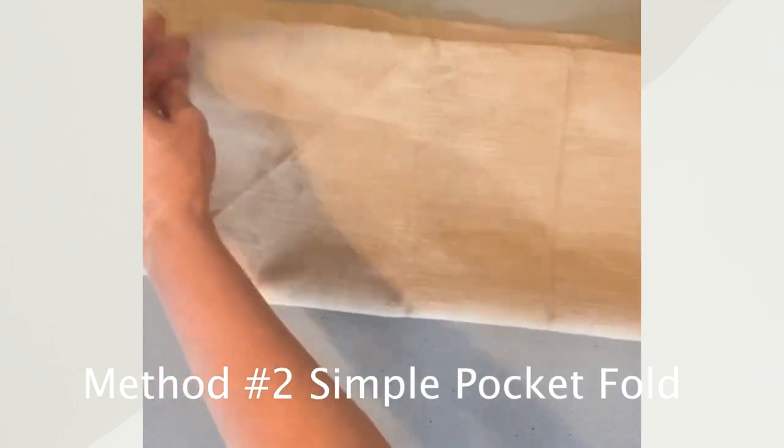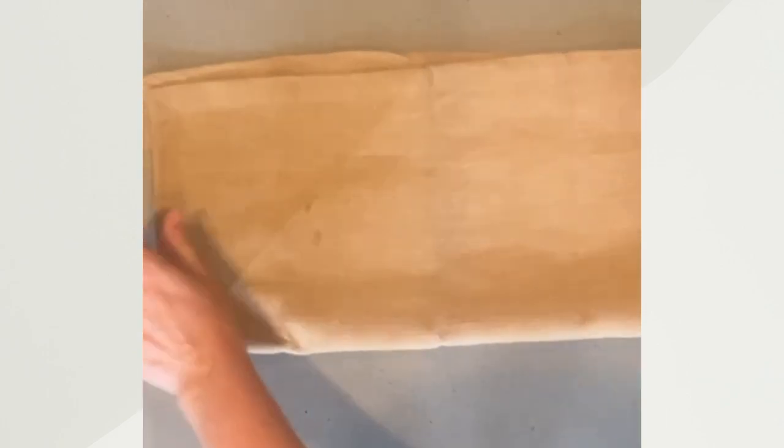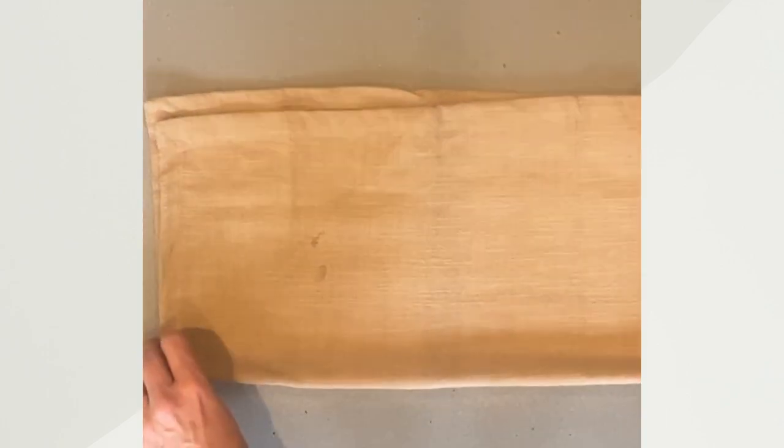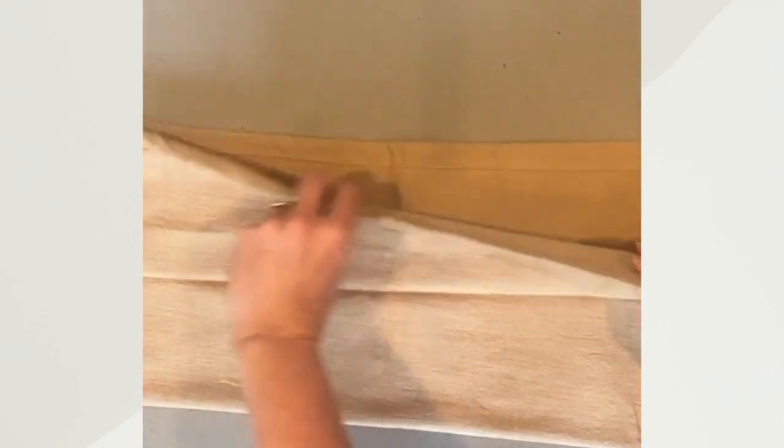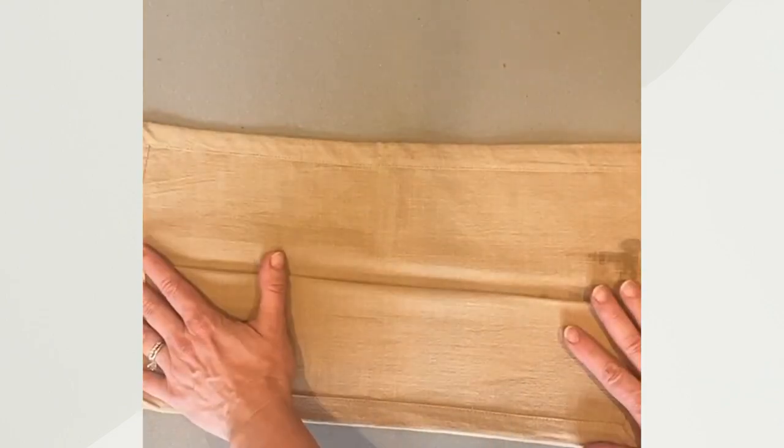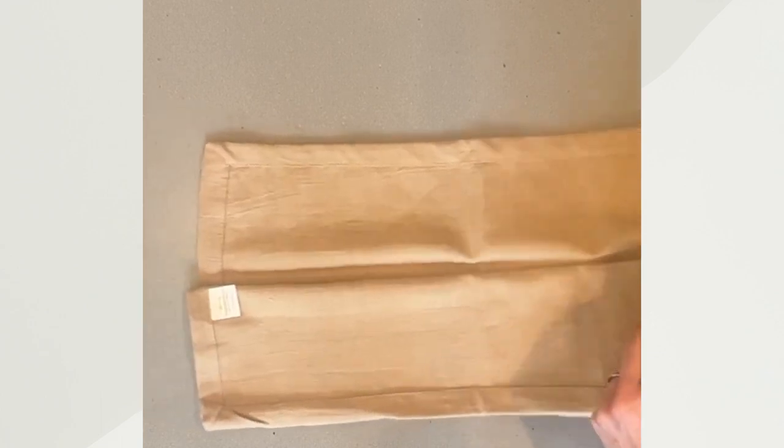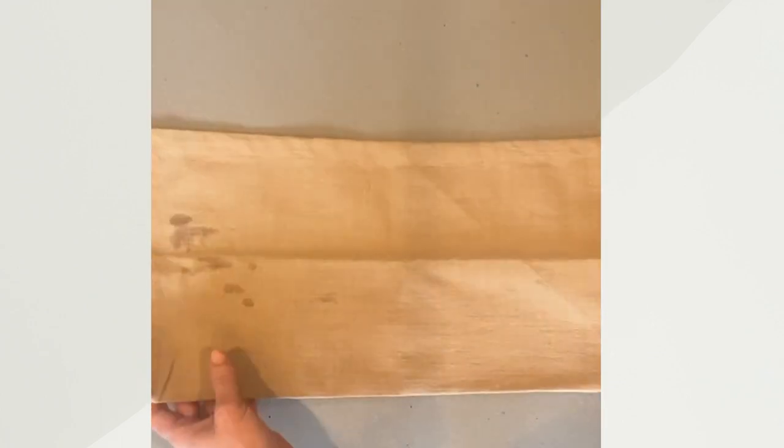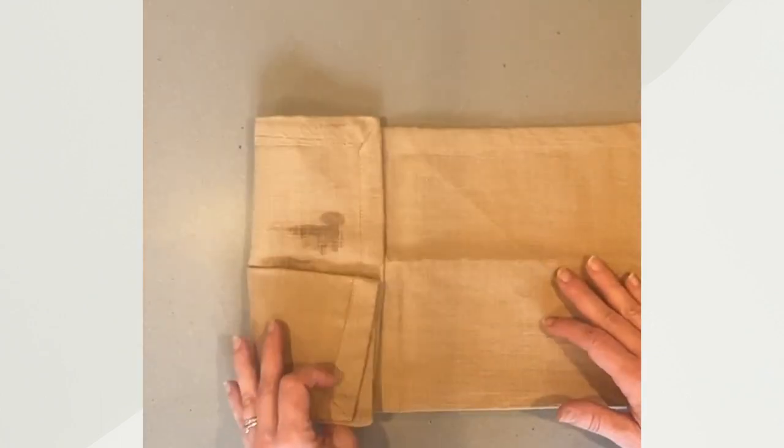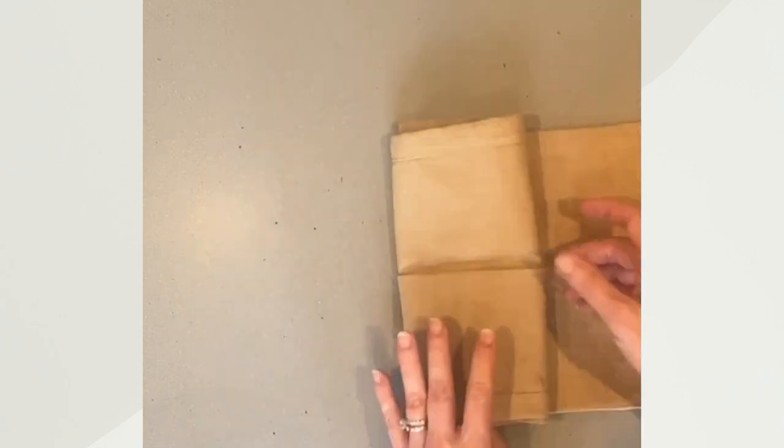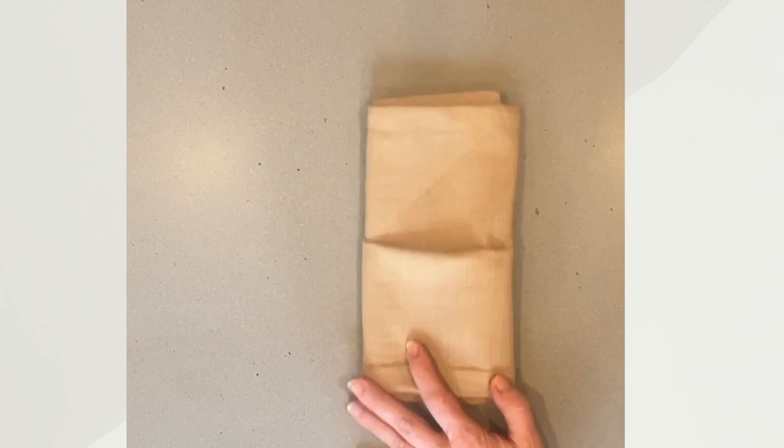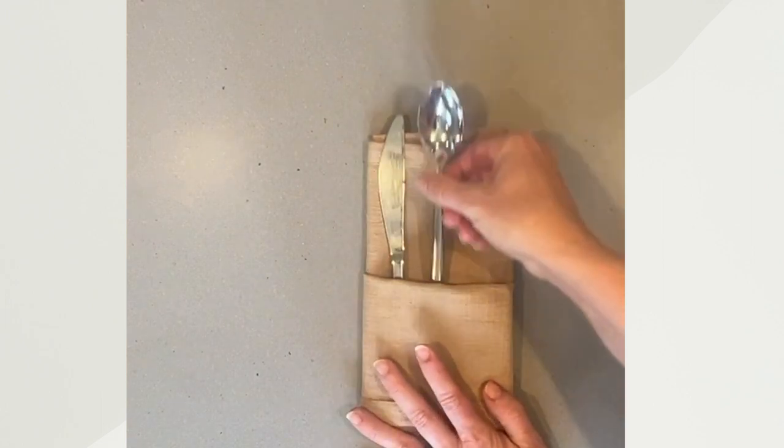Our next napkin folding trick we're going to take a napkin. This could be 17 by 17 up to 20 by 20 inches. Top half down, now flip the whole thing over. Do a tri-fold so like this: one, two, and three. Now you have a nice pocket. Add your silverware.